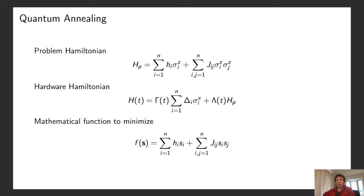I want to briefly review the basic setup for the quantum annealing implemented in D-Wave's hardware, because it's important for the homomorphic encryption technique. The basic setup is that a user has a problem Hamiltonian with coefficients h_i and J_ij, which are the inputs the user gives to the machine. You can think of this as minimizing a mathematical function f(s) = Σ h_i s_i + Σ J_ij s_i s_j, where the s_i values can take plus or minus one.